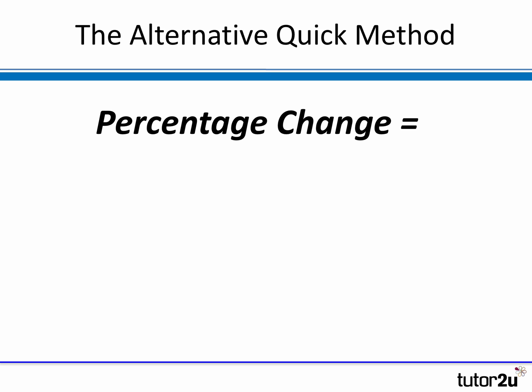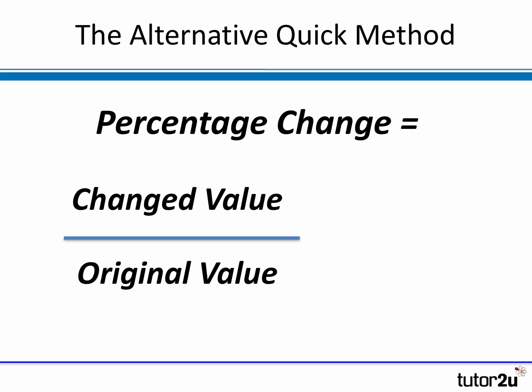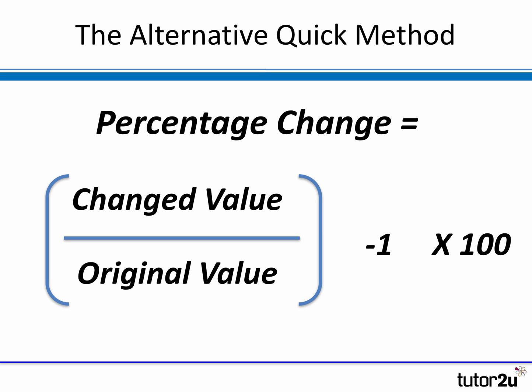The alternative method, which can be a lot quicker and involves one fewer step, is to take the changed value — the new value — and divide by the original value. What you then do is take away one and multiply by 100. So you're really just expressing the new value over the original value, take away one, times by 100, and you should get the same percentage change. It's entirely up to you which of those two methods you use.